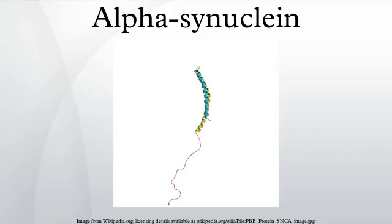Residues 61 to 95, a central hydrophobic region which includes the non-amyloid component region involved in protein aggregation. Residues 96 to 140, a highly acidic and proline-rich region which has no distinct structural propensity.